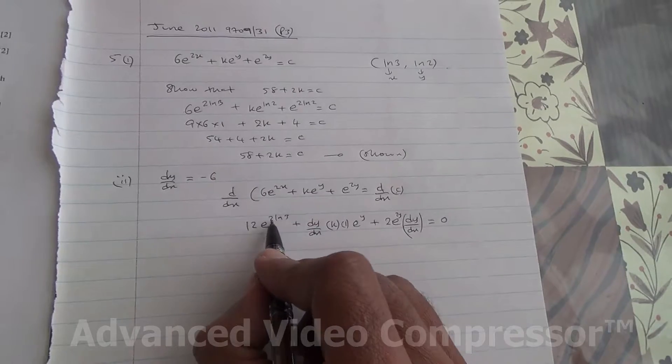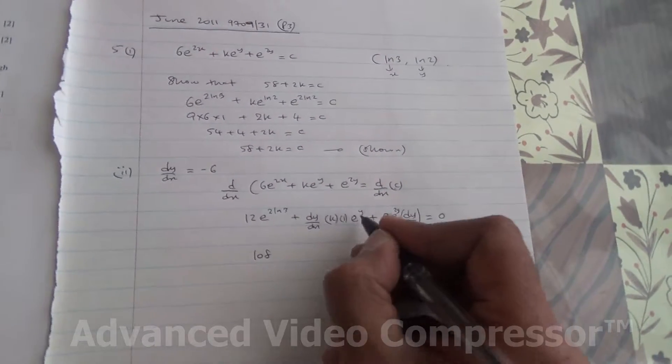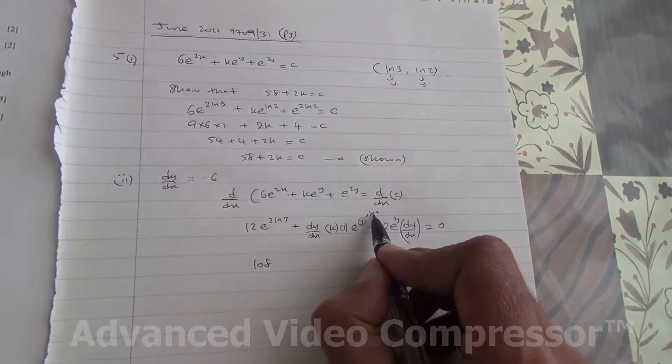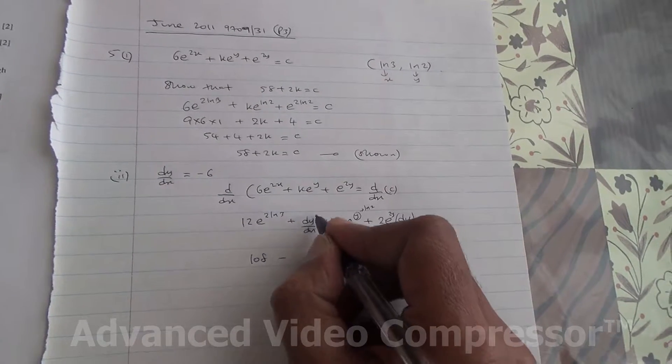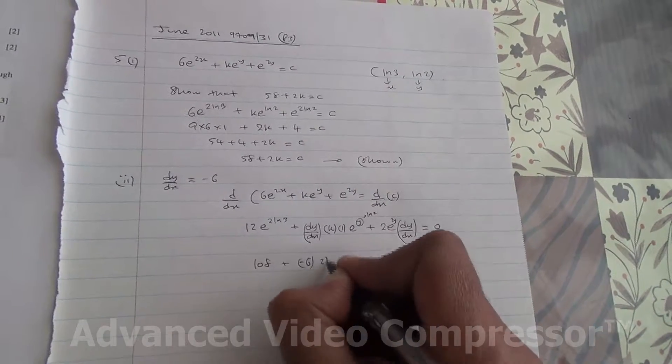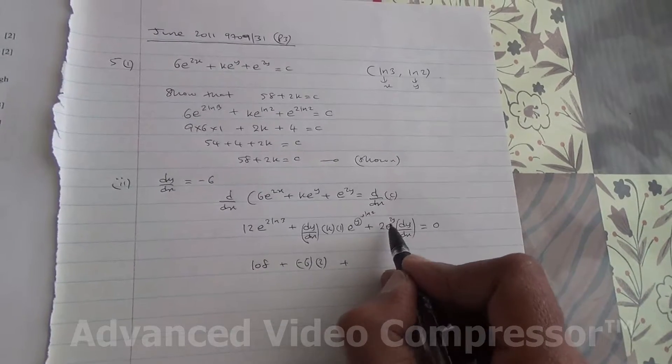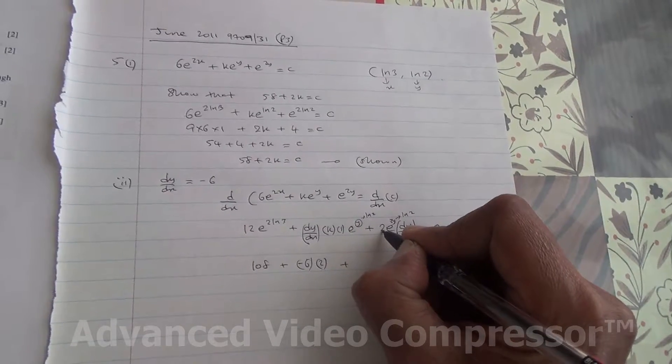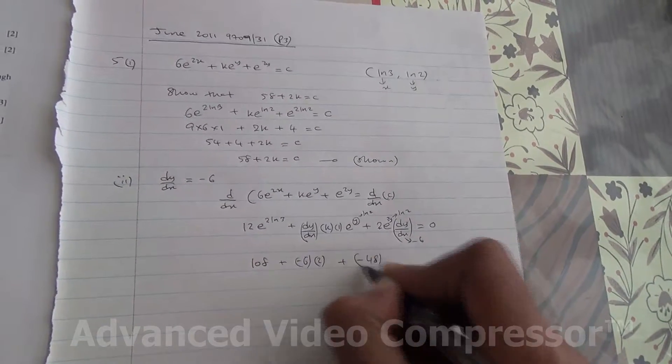So 3 to the square is 9, 9 times 12 is 108. ln e is 1, 1 times 108 is 108. e to the y, and y here is ln 2. Okay, so ln 2, then 2 times k is 2k, so we've got plus 2k. dy by dx is minus 6 as given here. So we're going to get minus 6 plus minus 6 times 2, ln e is 1, times 1, plus then you get e to 2 ln 2. So 2 to the square is 4, 4 times 2 is 8, 8 times minus 6 is minus 48, and that's going to give us 0.